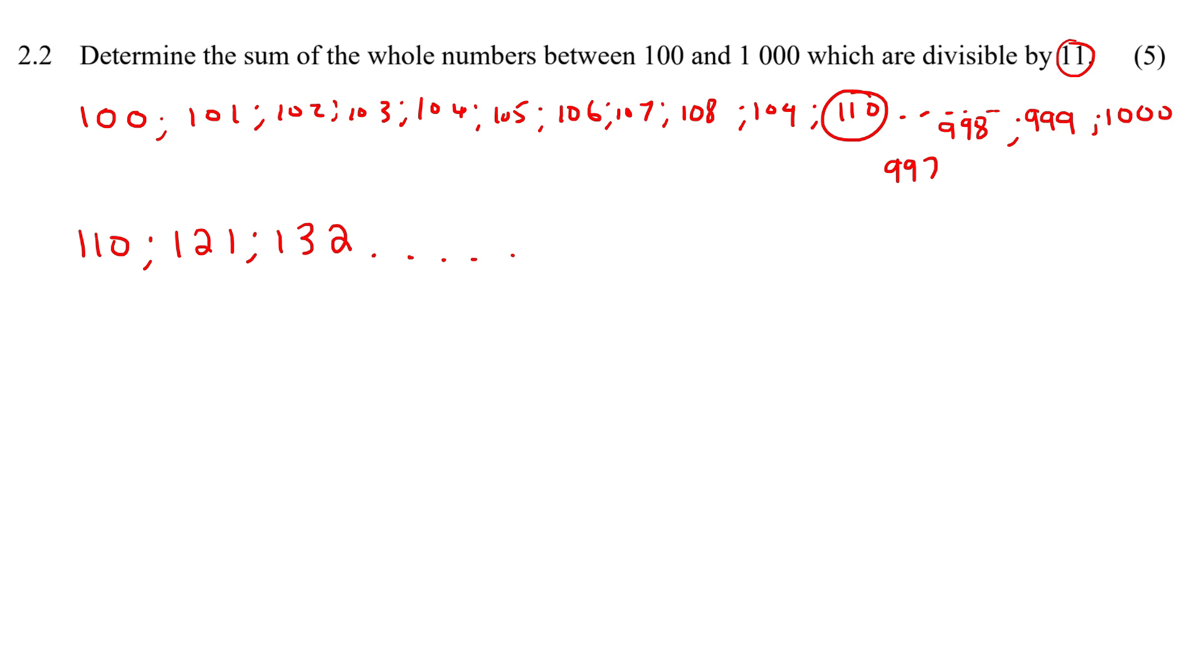Come on, 990! Ah, 990 works. Okay, so 990 is the biggest number we can get in this sequence that is divisible by 11. So that'll be the last term in the sequence here.